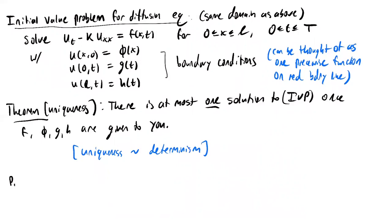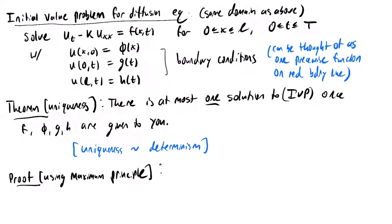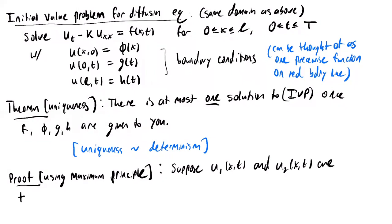We're going to prove uniqueness using the maximum principle. This is a very common argument in the study of partial differential equations. Suppose U1 of X,T and U2 of X,T are two functions which are solutions to the same initial value problem.